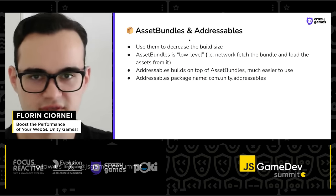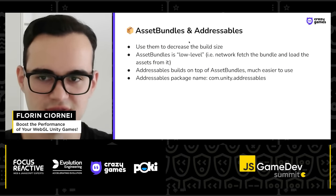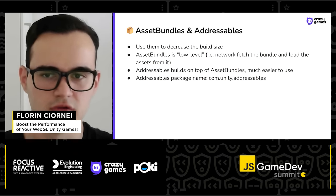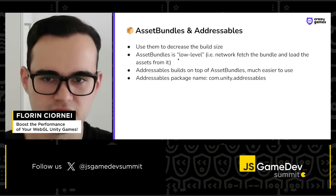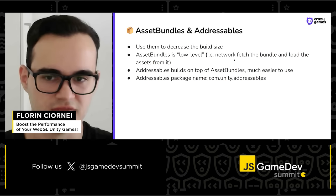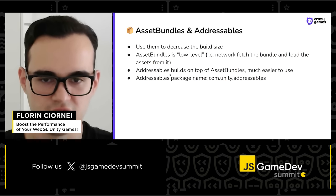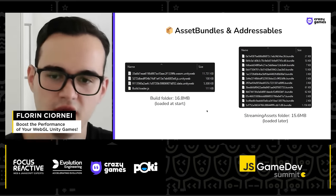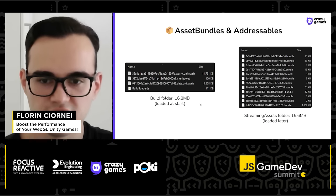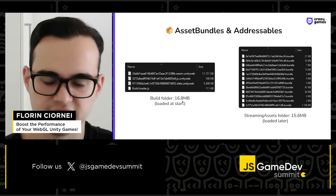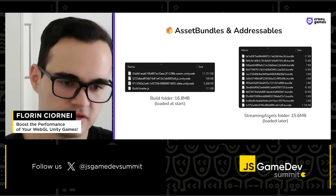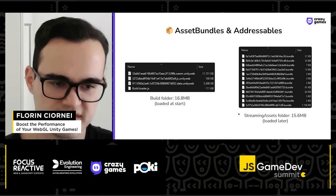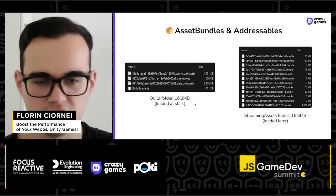Consider using asset bundles and addressables, as they help decrease the initial load size. They work by extracting textures, audio, and other objects into separate files that get loaded only when needed. Asset bundles are low-level — you fetch the file and extract assets from it. Unity's addressables package builds on top of asset bundles and is much easier to use. For example, one game using addressables had an initial build folder of around 17 megabytes, with a streaming assets folder of around 16 megabytes loaded later — saving around 16 megabytes from the initial game load.